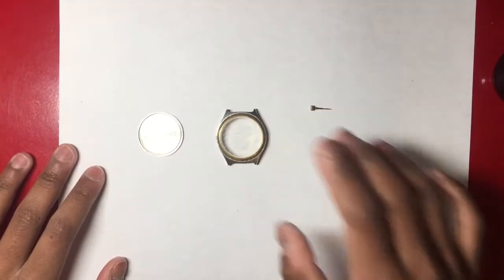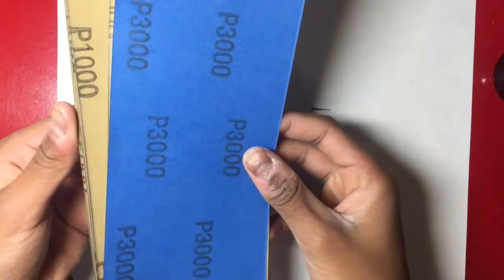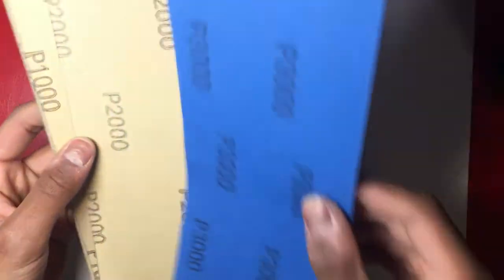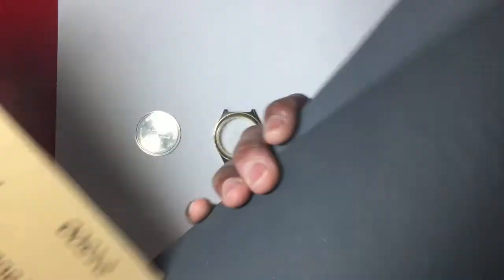All right we're ready to begin sanding. I have a bunch of sandpaper here with grits ranging from 600 to 3000. 3000 is the finest grit and 600 is the most coarse.